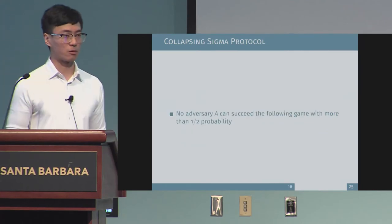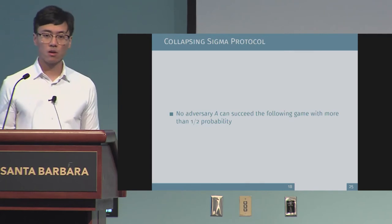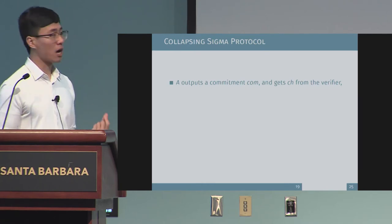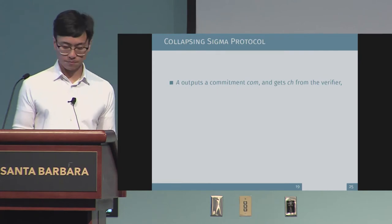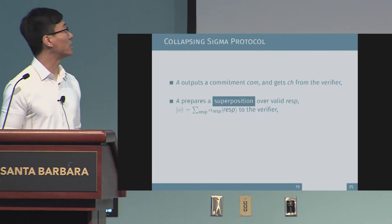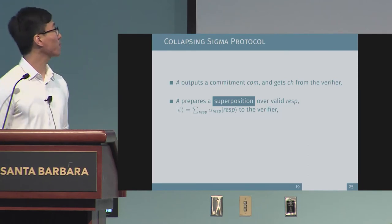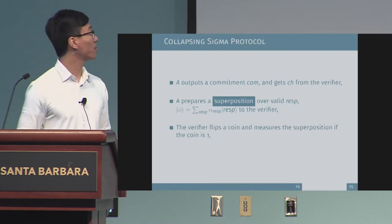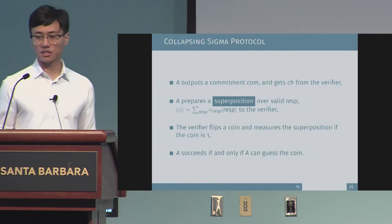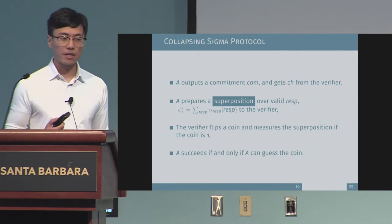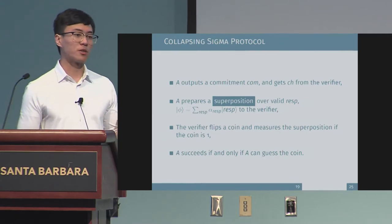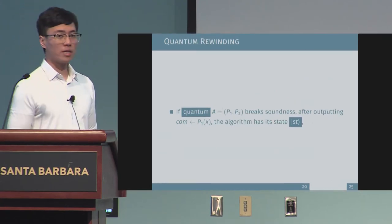Here is the definition of a collapsing Sigma protocol. No adversary A can succeed at the following game with more than half probability. Algorithm A outputs a commitment first and gets a random challenge from the verifier. Then A prepares a superposition over all valid responses — valid meaning with respect to the commitment and the challenge — and sends the superposition to the verifier. The verifier flips a coin: if the coin is one, it measures the superposition; otherwise it does nothing. A succeeds if and only if it can guess the coin. In other words, collapsing means no adversary can tell if the superposition was measured or not.